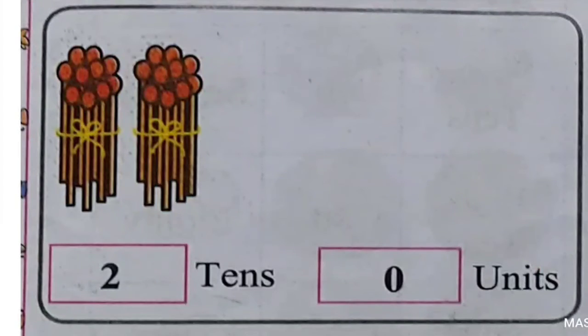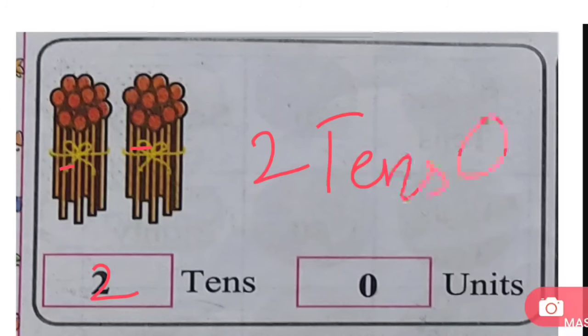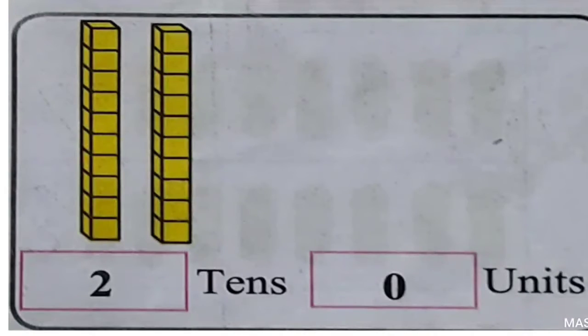Let's do it. Here, look at this: 2 tens. 2 tens, 0 units. 2 tens, 0 units, 20. 2 tens, 0 units, 20.